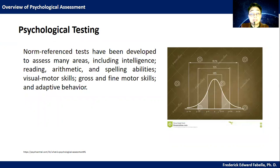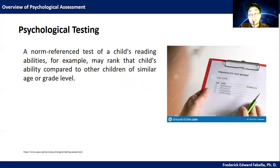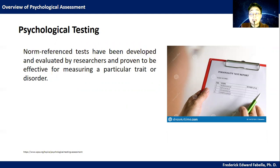Norm-referenced tests have been developed to assess many areas, including intelligence, reading, arithmetic, and spelling abilities; visual motor skills; gross and fine motor skills; and adaptive behavior. A norm-referenced test of a child's reading abilities, for example, may rank that child's ability compared to other children of a similar age or grade level. Norm-referenced tests have been developed and evaluated by researchers and proven to be effective for measuring a particular trait or disorder.